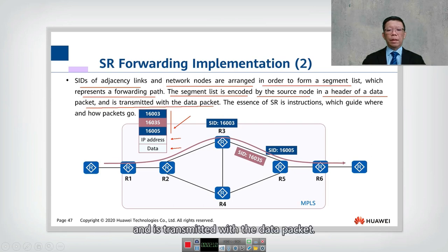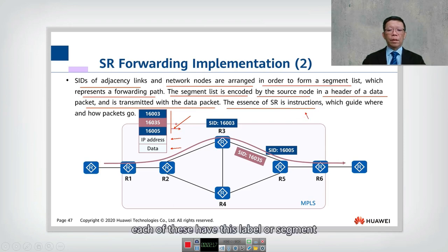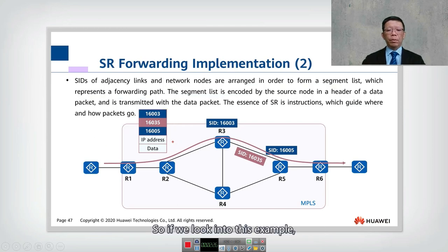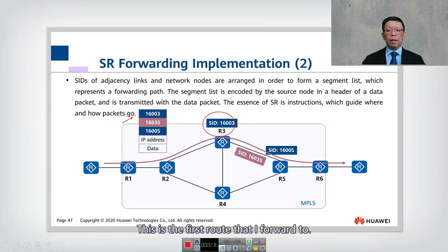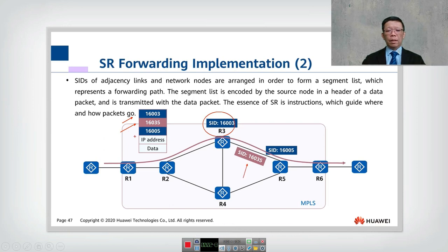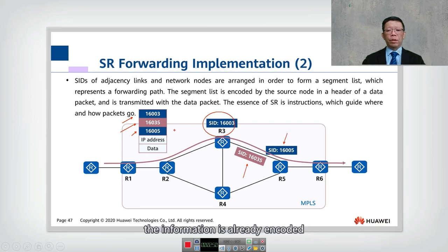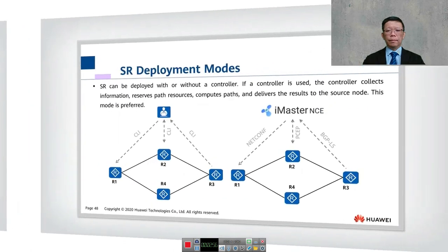The essence of segment routing is instruction — each segment or label guides where and how the packet goes. In this example, first the packet is forwarded to 16003, then to 16035, and finally to 16005. As you can see, the forwarding information is already explicitly encoded in the packet header. We now have two modes for segment routing deployment.